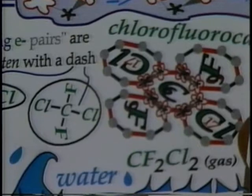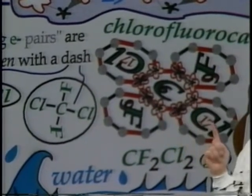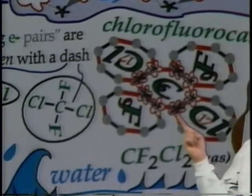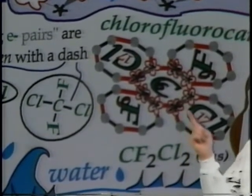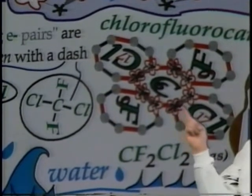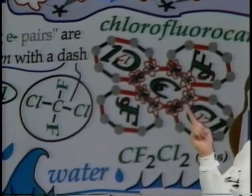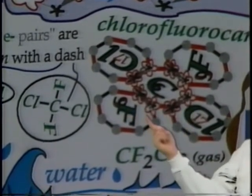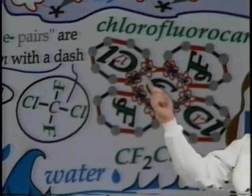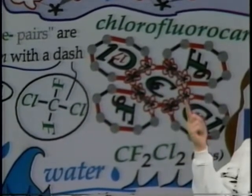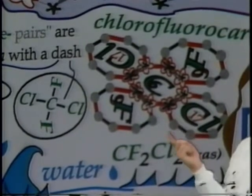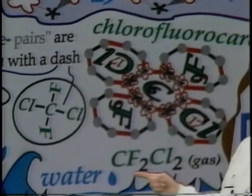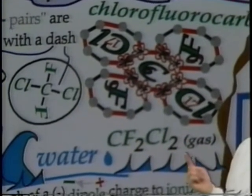Another example of covalent bonding is carbon, being in the middle of the table with four valence electrons. It needs four more, so by pairing up, chlorine — needing one more electron — will share with one of carbon's vacancies so chlorine has its octet. Fluorine, needing one more for its octet, bonds similarly, giving everyone their octet and forming a chlorofluorocarbon known as CF2Cl2 as a gas.